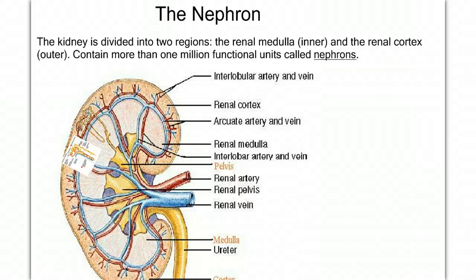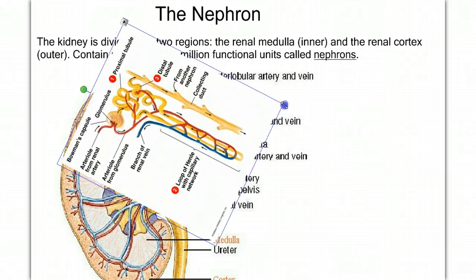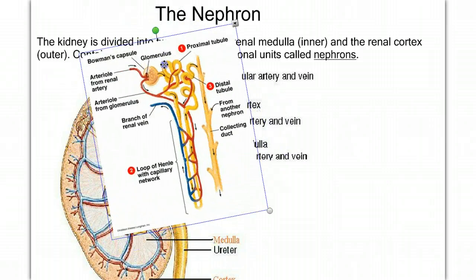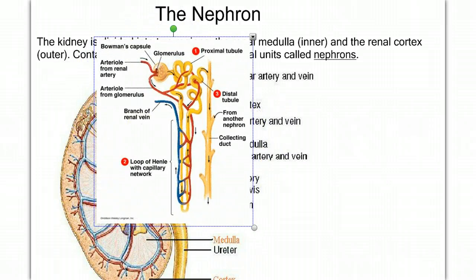If you remember from our last video, the kidney contains more than a million functional filtering units called nephrons. It's the nephrons that do the job in the kidney. In this video, we're going to zoom in on the nephron and look at how it does this job.